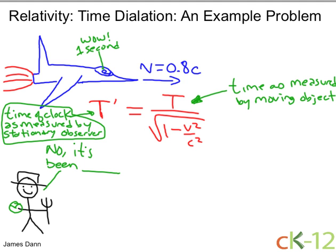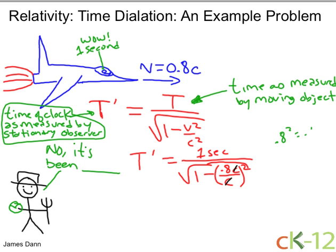So when we plug in the numbers, we have T prime equal to one second all divided by the square root of 1 minus 0.8 times the speed of light, all divided by the speed of light, and all of this is squared. We can see right off the bat that the c's cancel. And I just have a 0.8 squared, which is equal to 0.64.